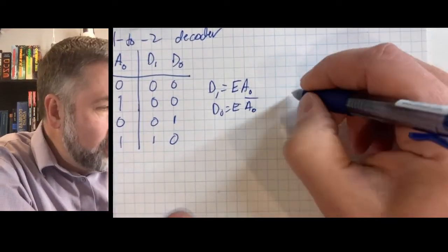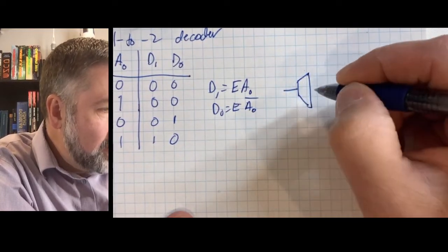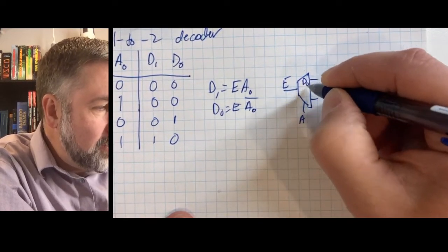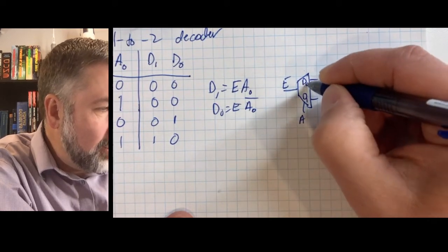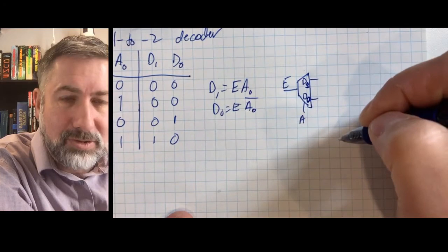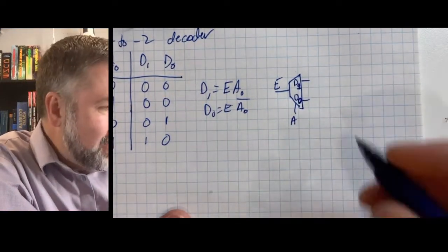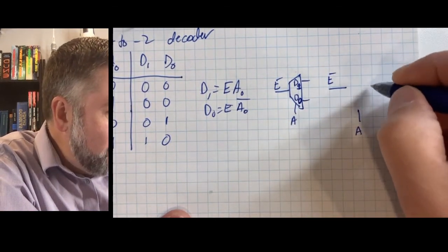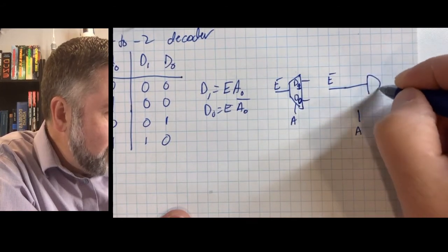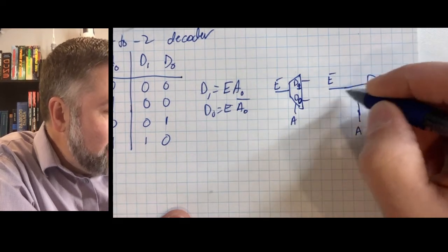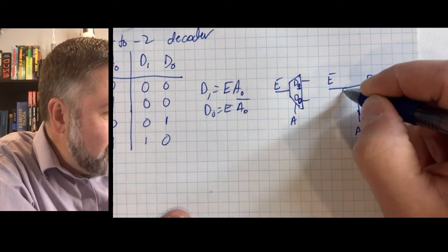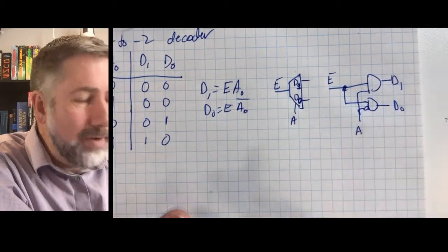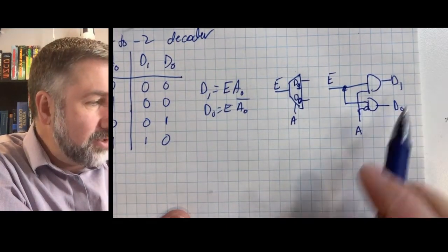So this looks like — we'll draw the circuit. It has the enable bit and the address line as inputs, with D0 and D1 as outputs. D1 is an AND gate with the enable and A. D0 is an AND gate with the enable and A prime. So we have an AND gate for every minterm that we generate, and that gives us each of our outputs.